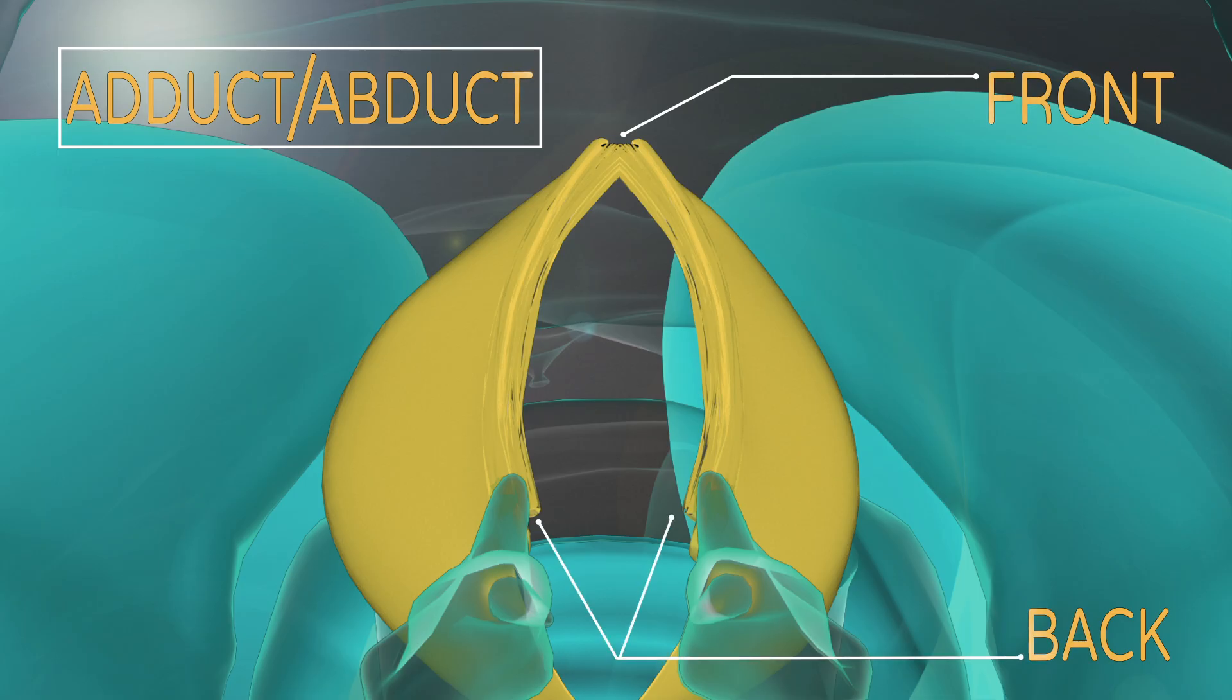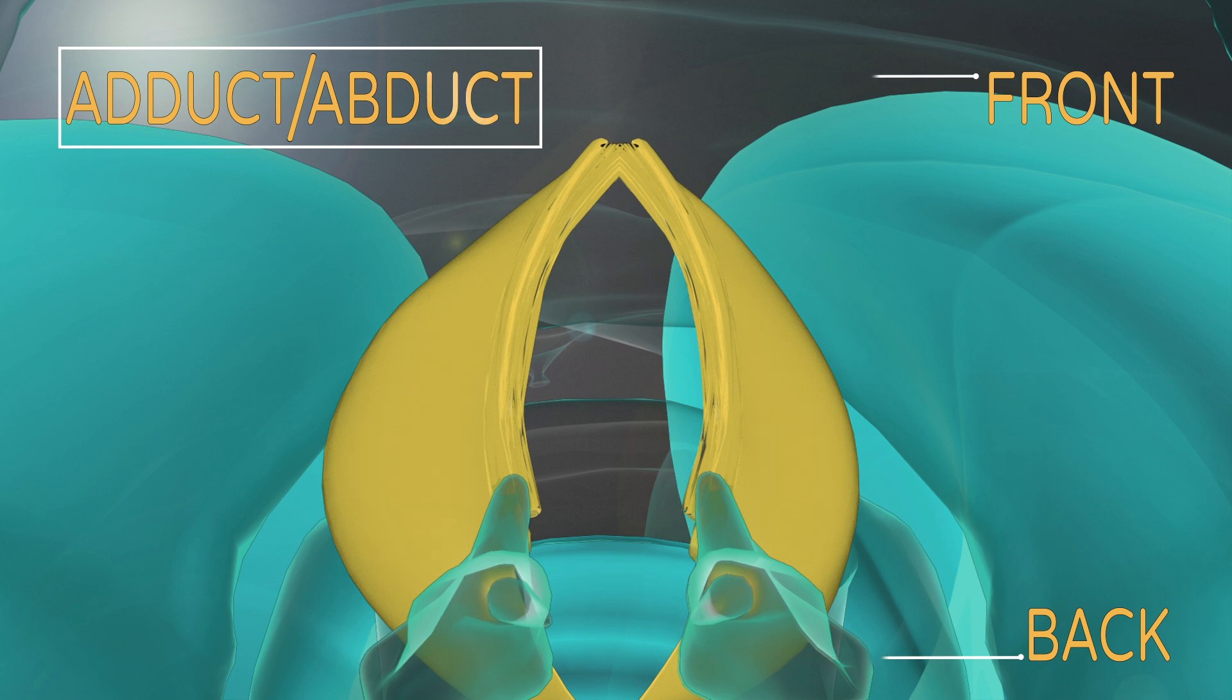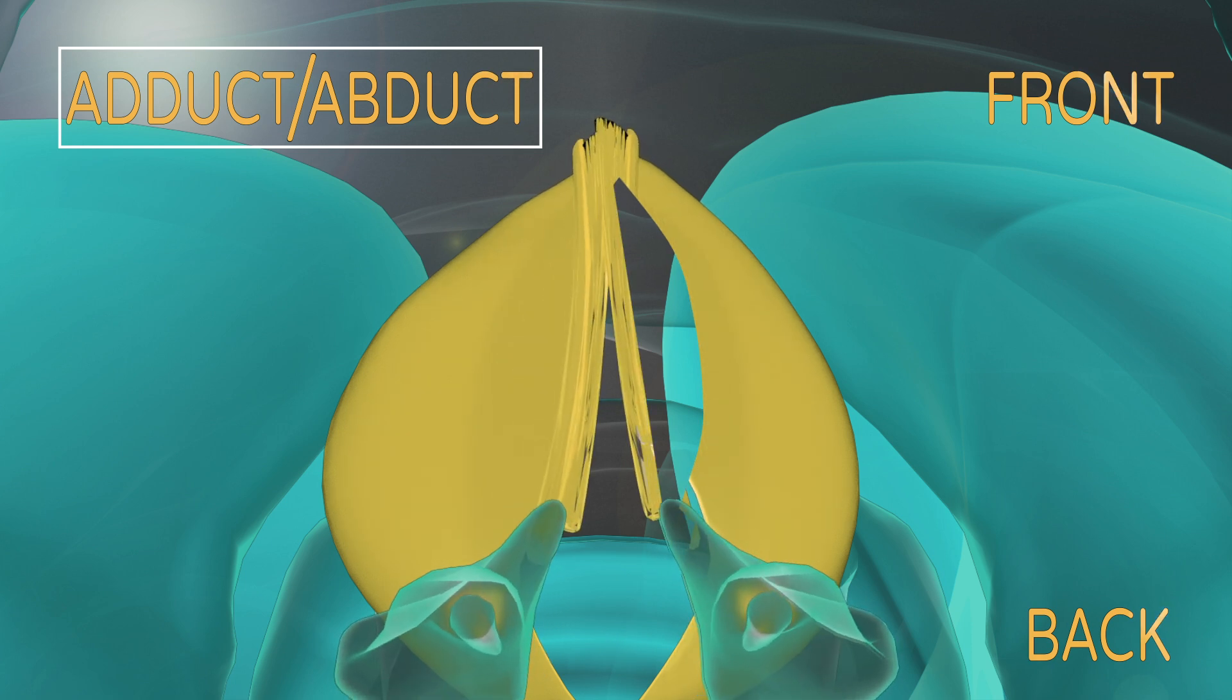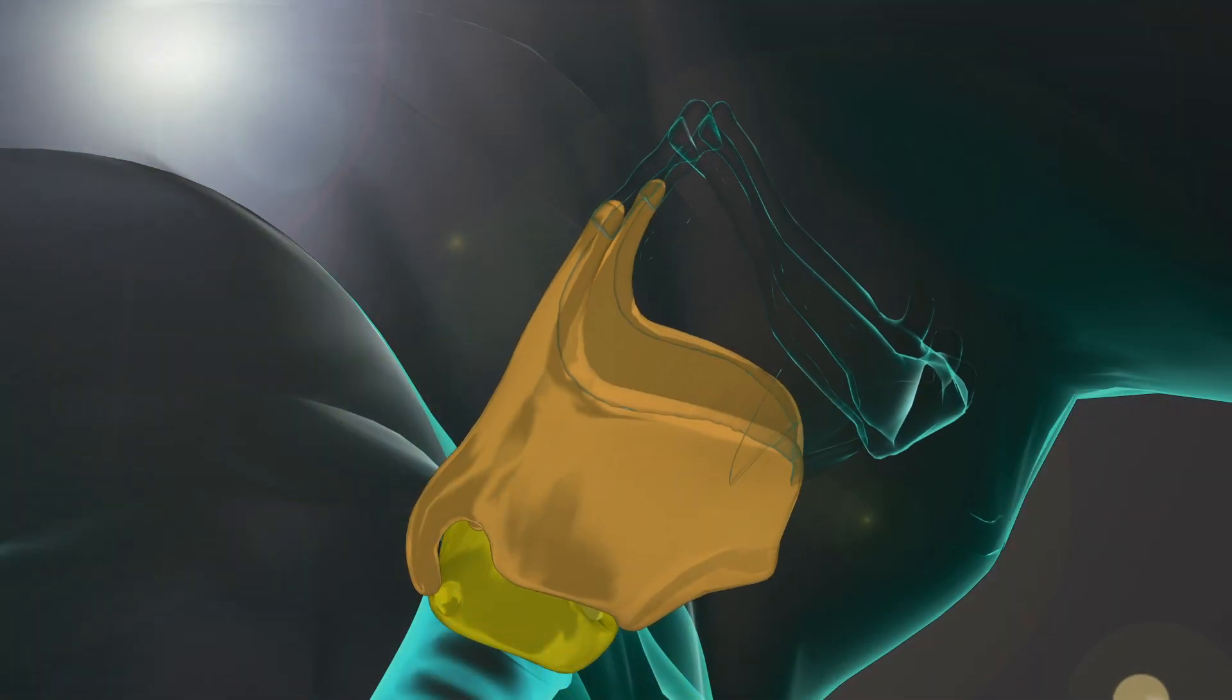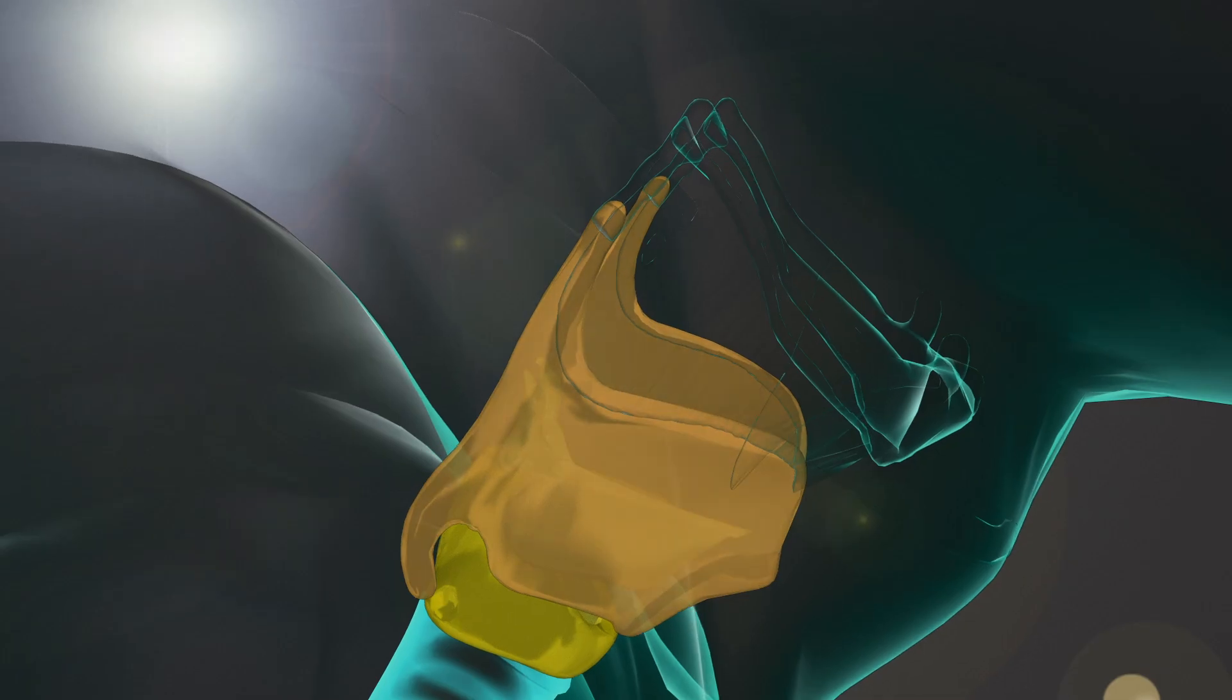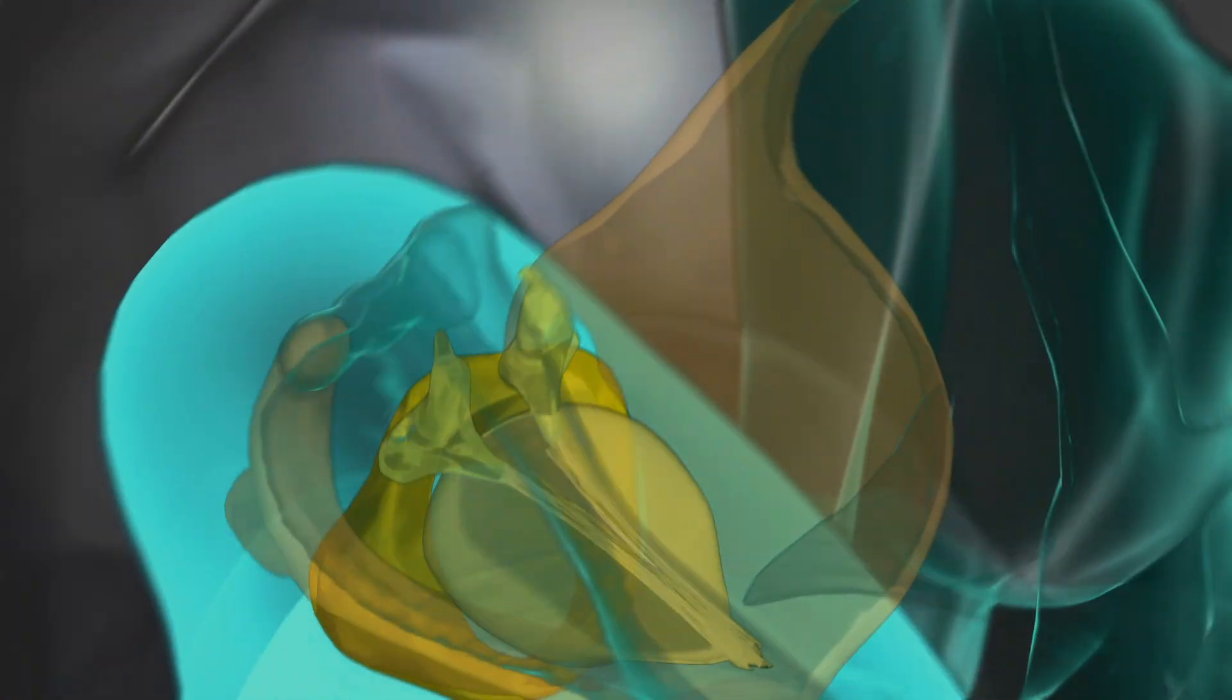This V-shape is the resting position of the vocal folds and as we produce sound the muscles in the back help them adduct and close. We have three groups of muscles in the back of the larynx that help the vocal folds move together and move apart.